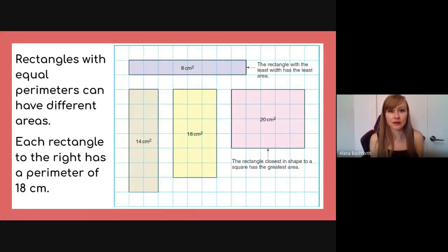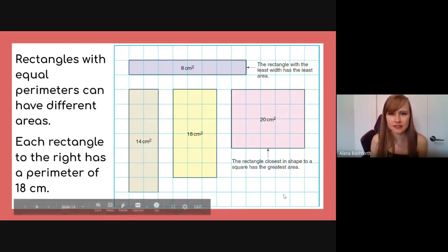And so we can apply that to our lesson then. So rectangles with equal perimeters can have different areas. So each rectangle to the right has a perimeter of 18 centimeters. And so you'll see this long skinny one. If you were to count up all of the edging here, it would equal 18. Same with this one.